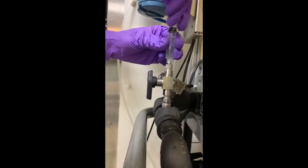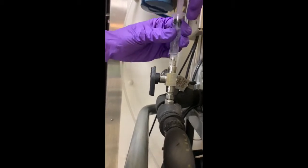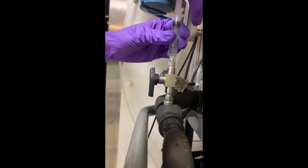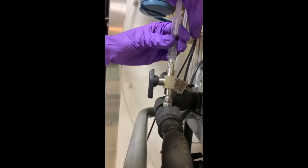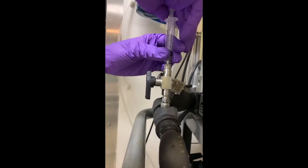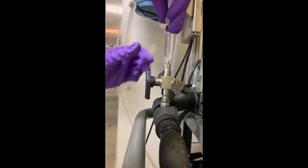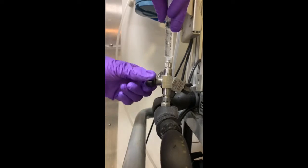A sample is taken at the beginning of the run to determine initial water loading, as well as at specific intervals throughout the run. Pressure, temperature, level, and water loading data is entered into the software to monitor the progress of the separation.